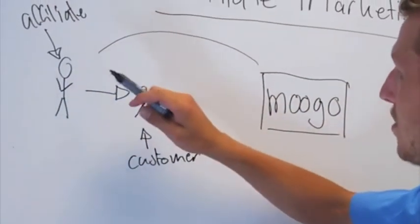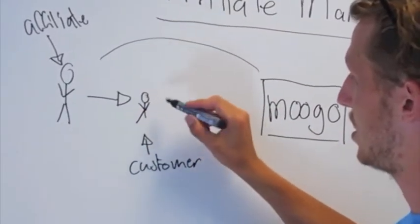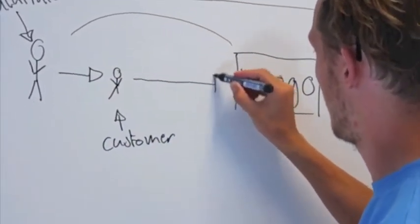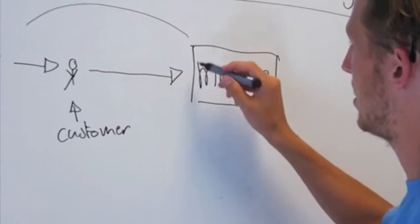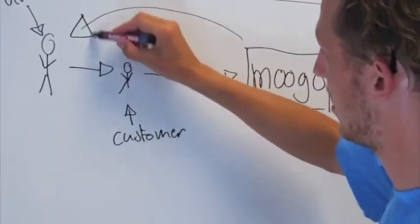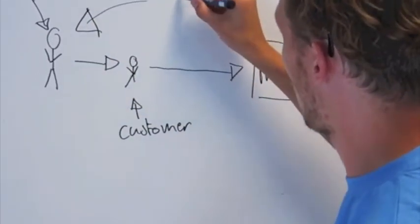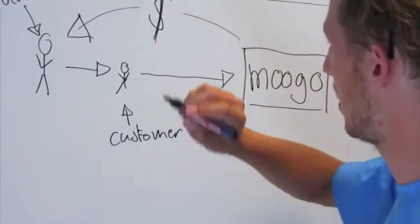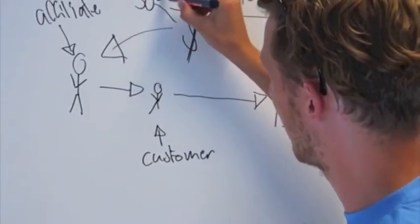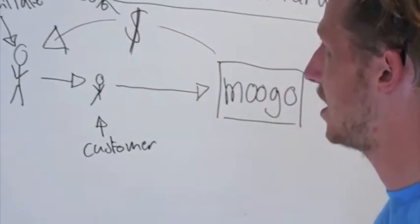So, this affiliate recommends Mugro to this customer, which is the customer to us, our pub. And if the customer makes a purchase, we will pay the affiliate 50% I might add. But I'll go into that later.